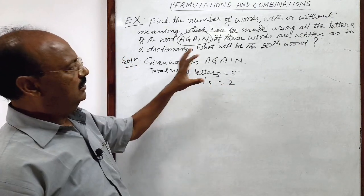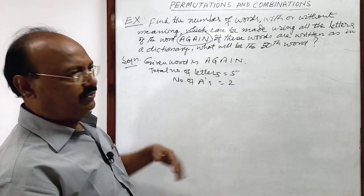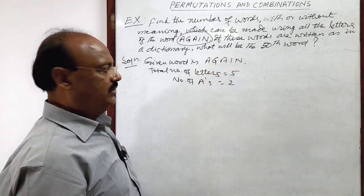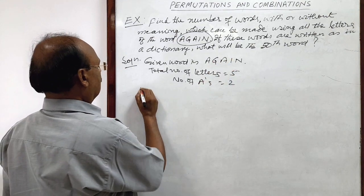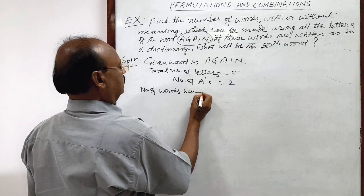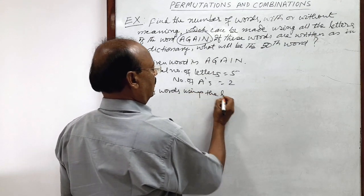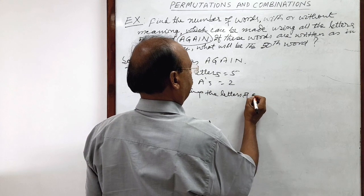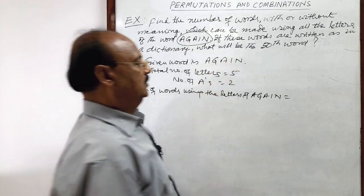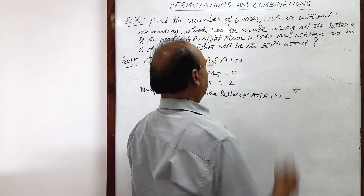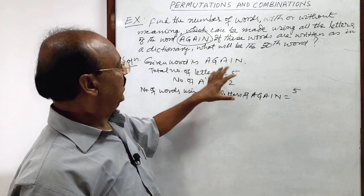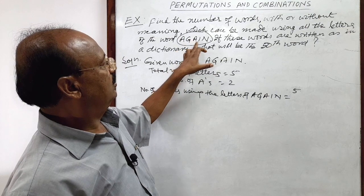Number of A's is equal to 2. How we can form different words using these letters we have to solve it. Number of words using the letters of again, how much total is? 5. Total number is 5 and we have to select all the letters at a time.